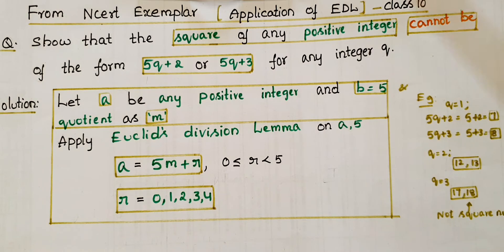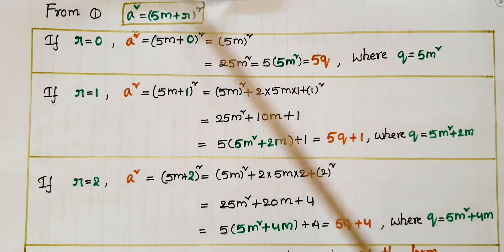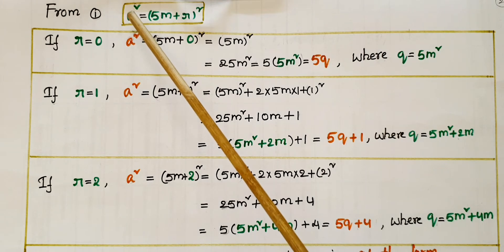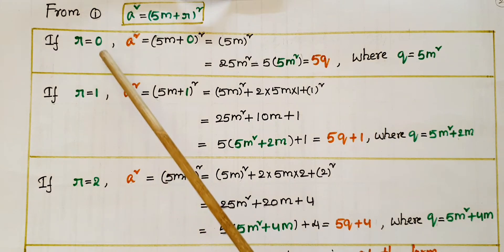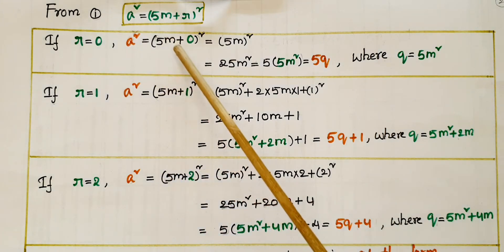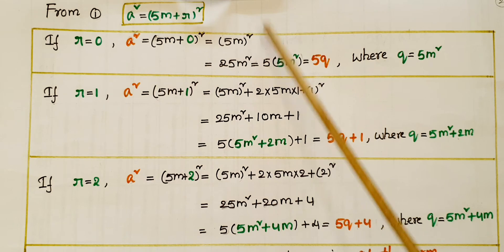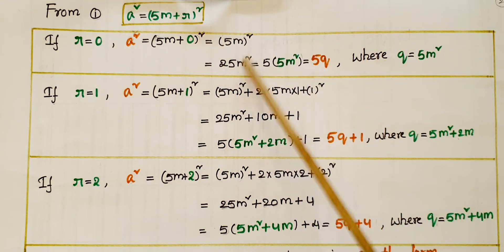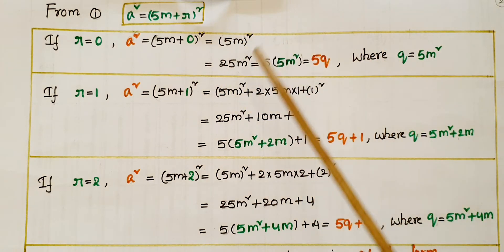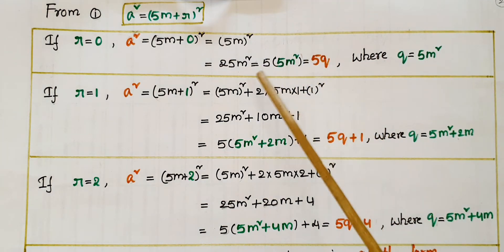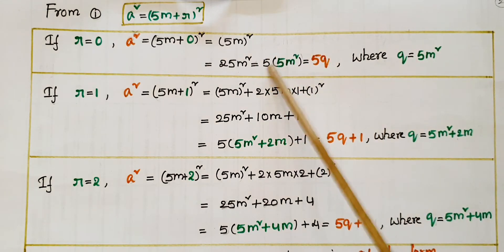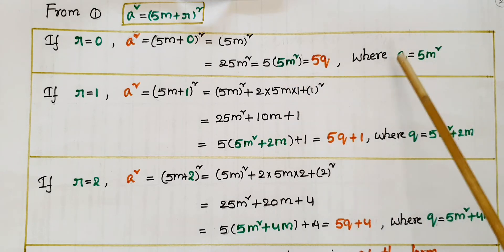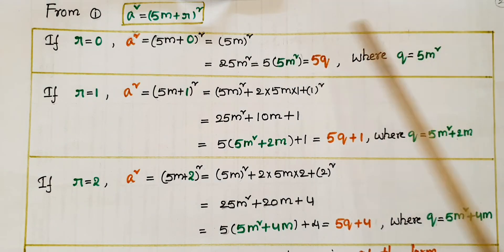From this, a squared is equal to the square of the positive integer: a squared equals (5m plus r) whole square. If r is equal to 0, a squared equals (5m plus 0) squared, which is (5m) squared, that is 25m squared. Taking out 5: 5 into 5m squared, which equals 5q, where q is equal to 5m squared.